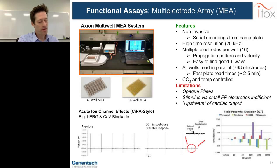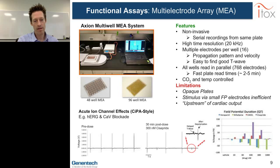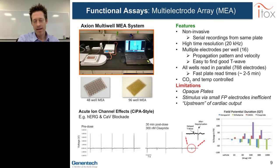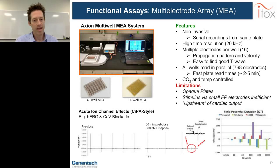The system we use most here in-house is the Axion multi-well MEA system. MEA systems have been around for roughly four decades, but Axion has turned this into a legitimate multi-well platform. The system is small for a plate reader, environmentally and temperature controlled. We use a 48-well plate where each well has 16 non-invasive field potential electrodes in a 4×4 grid. A strong advantage is that because the electrodes are non-invasive, you get serial recordings from the same plate — we can record from this plate every day for a month if needed. The system samples at 20 kHz, giving fine resolution of depolarization features.